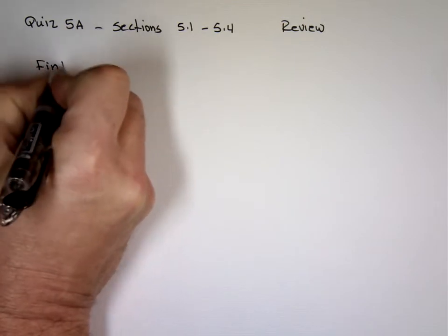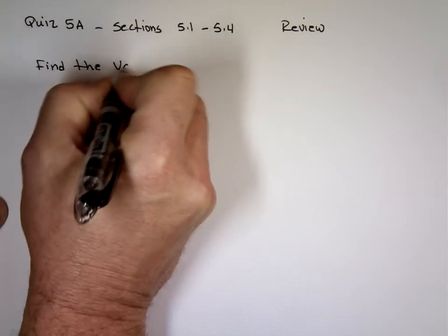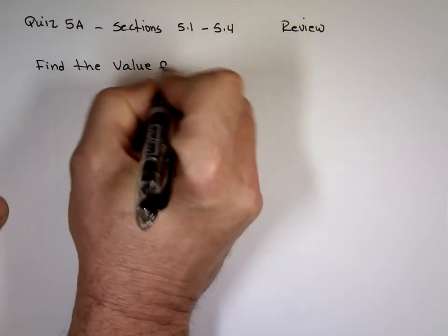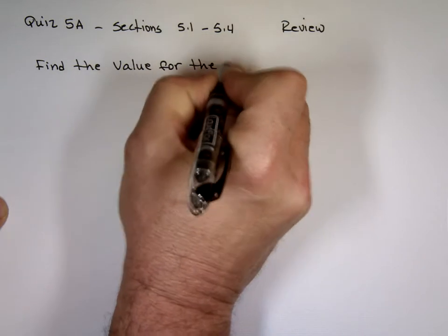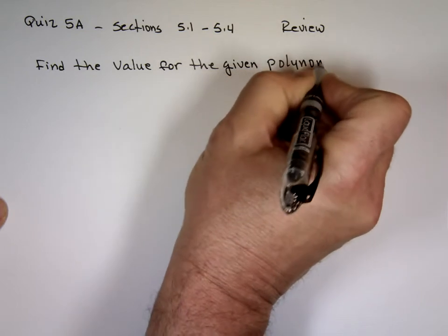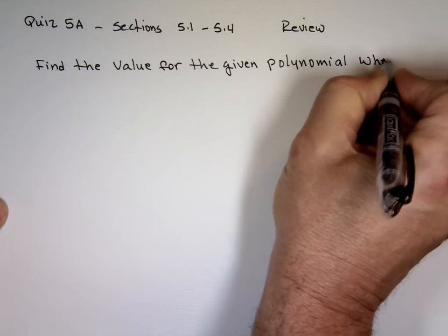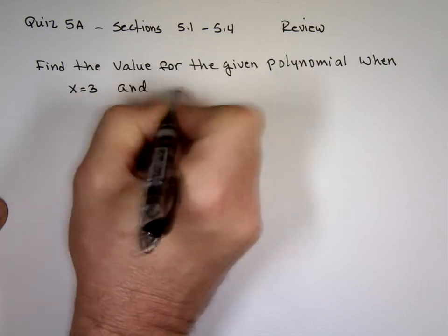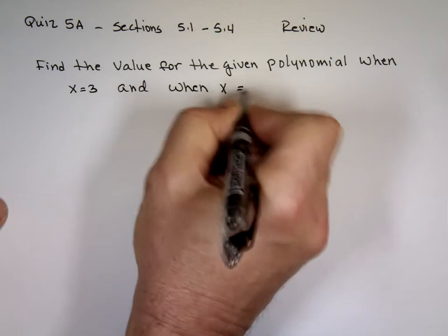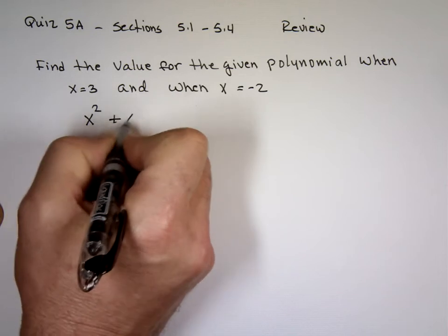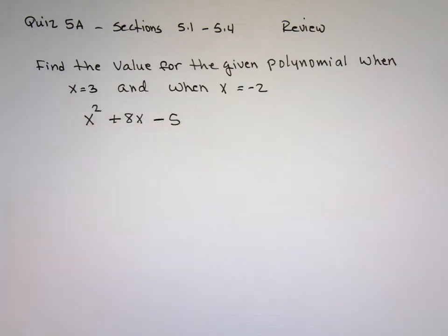Find the value for the given polynomial. I'm going to review for the quiz actually — the test is not for a while. Find the value for the given polynomial when x equals 3 for part a, and when x equals negative 2 for part b. The polynomial is x squared plus 8x minus 5. What is the value of that expression when x equals 3? That's part a.